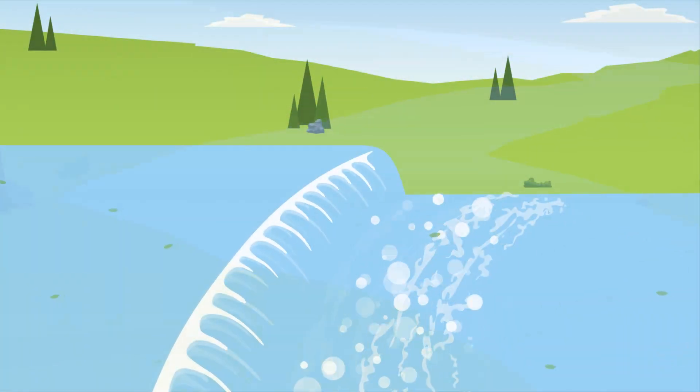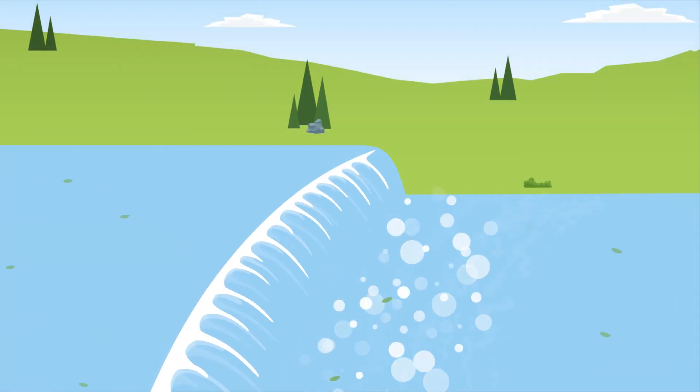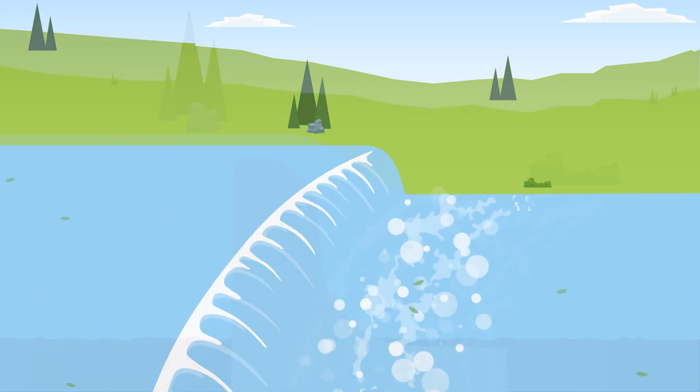Greg knows that when it comes to low-head dams, looks can be deceiving. Appearing harmless at the water's surface, these underwater structures are known as drowning machines.